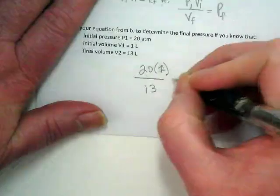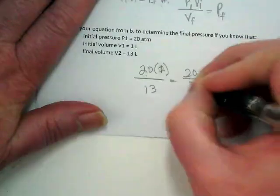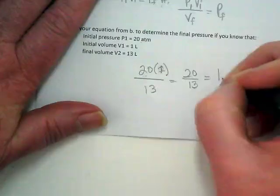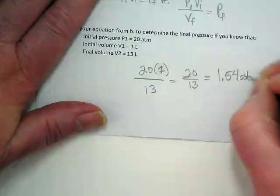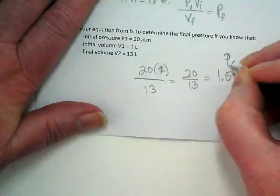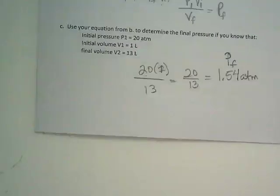Over 13 is equal to 20 over 13 is equal to 1.54 atm, and that's what P of F, sub F, or the final pressure would be.